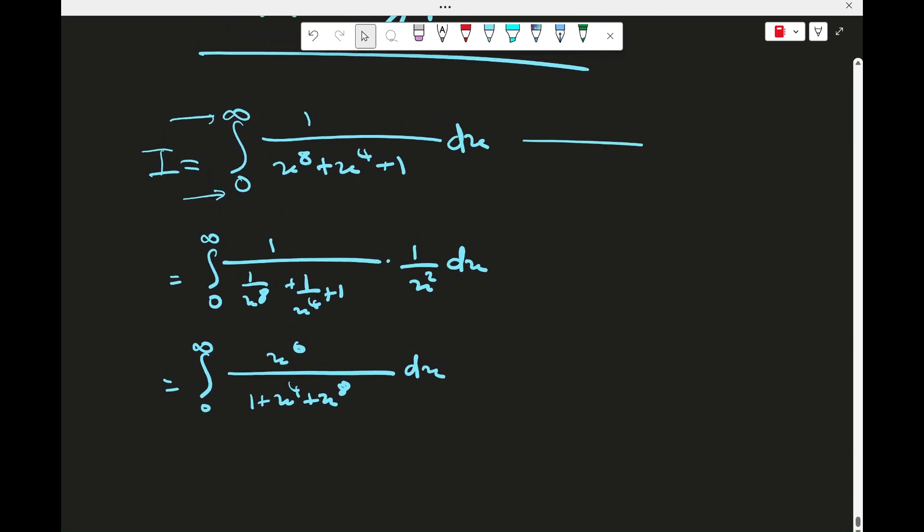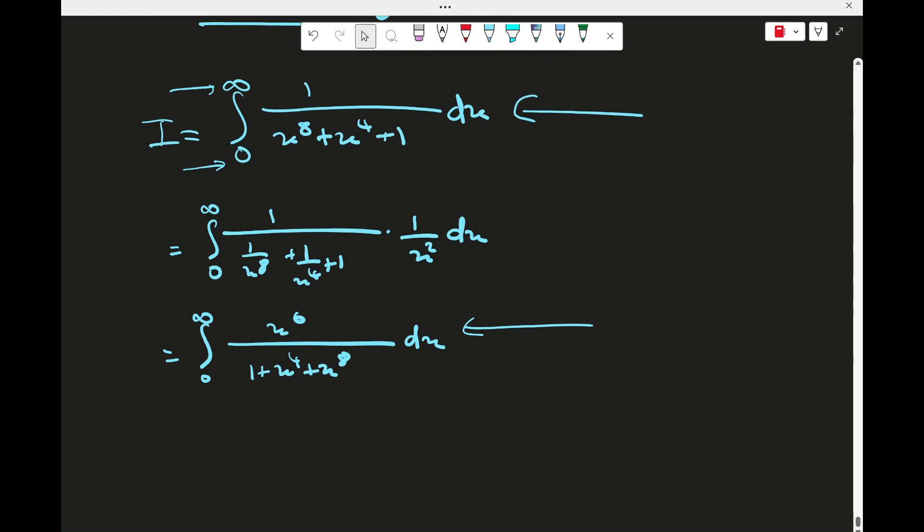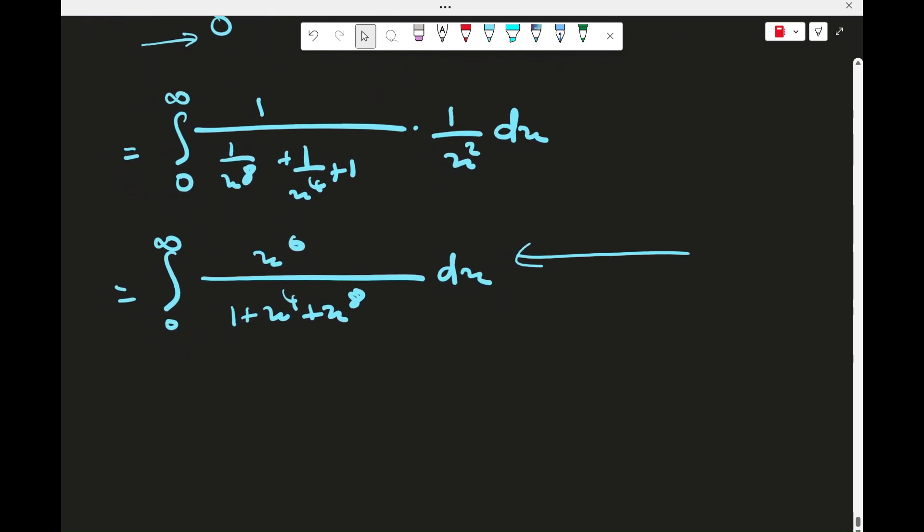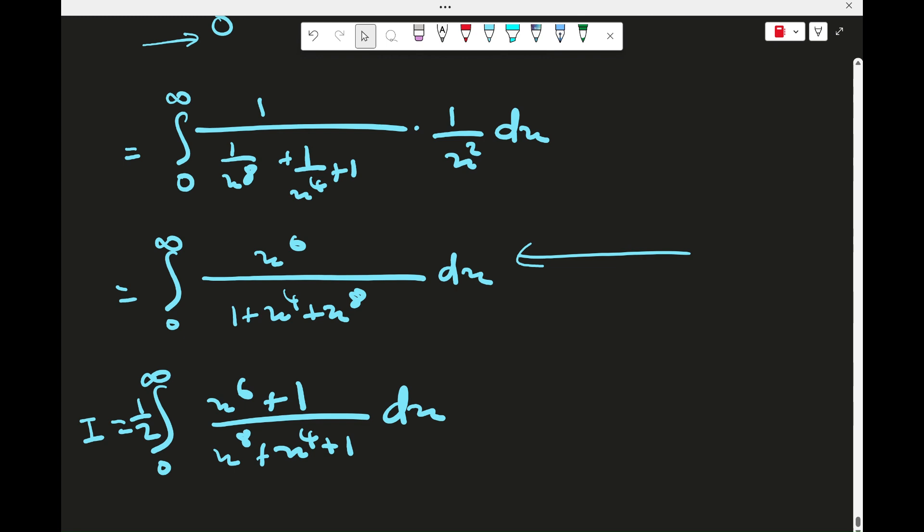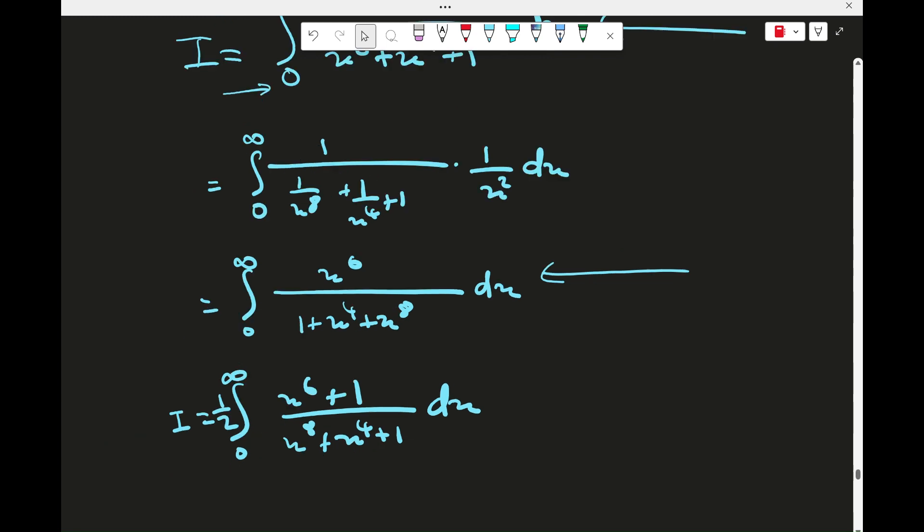So now we have two forms of the same integral, and also the bounds are the same and that's pretty good. So we can add the two integrals together to give us 2i and then divide by 2 to give back i. So the integral i is just half of the sum of these integrals. I forgot the half. It's pretty easy to forget the half but it's fine.